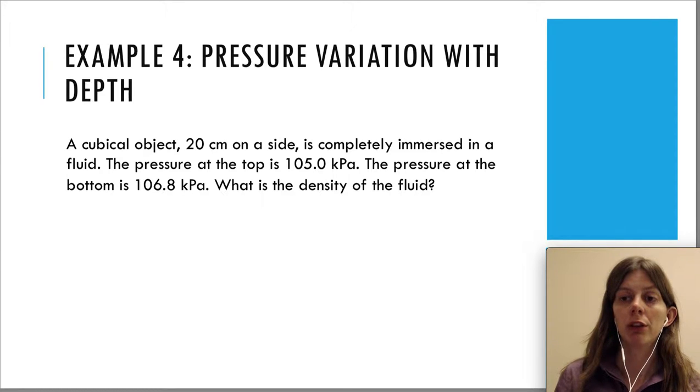This one is called pressure variation with depth. We have a cubical object 20 cm on the side. It's completely immersed in a fluid. The pressure at the top is given, 105 kilopascals, the pressure at the bottom. You notice that the pressure at the bottom is more because you have that extra weight of the fluid above you. It's 106.8 kilopascals. What's the density of the fluid?